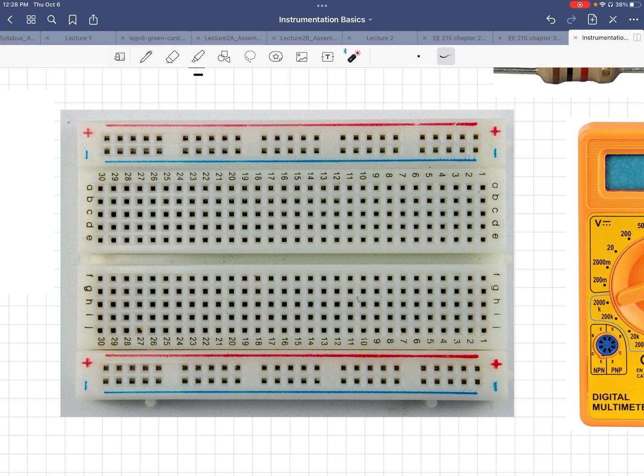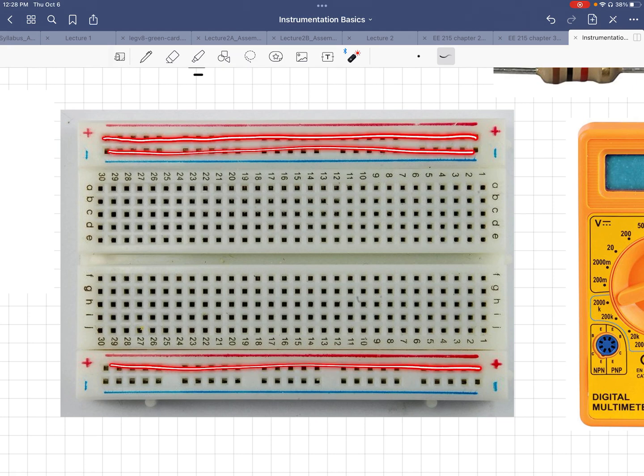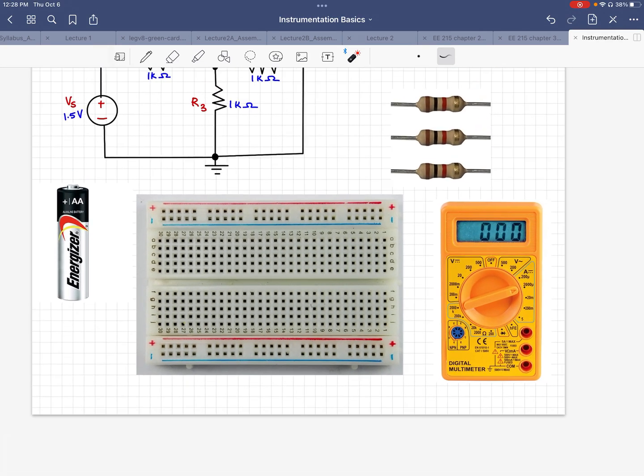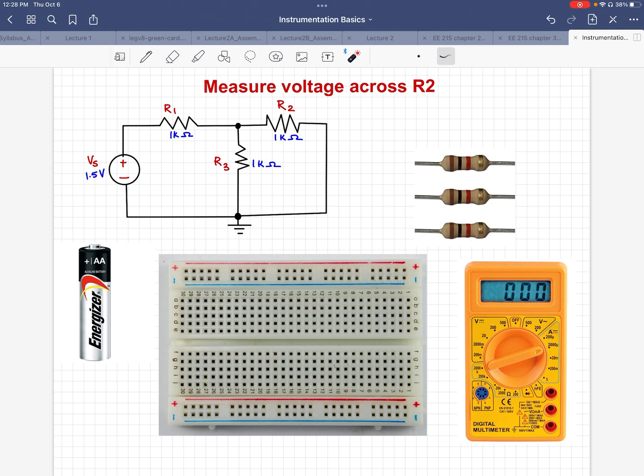However, if you look at the top and the bottom, those are power rails. Those are meant for power supply and ground. These are connected horizontally all across the board behind that plastic, and we'll use this knowledge while we are making the circuit on the breadboard.